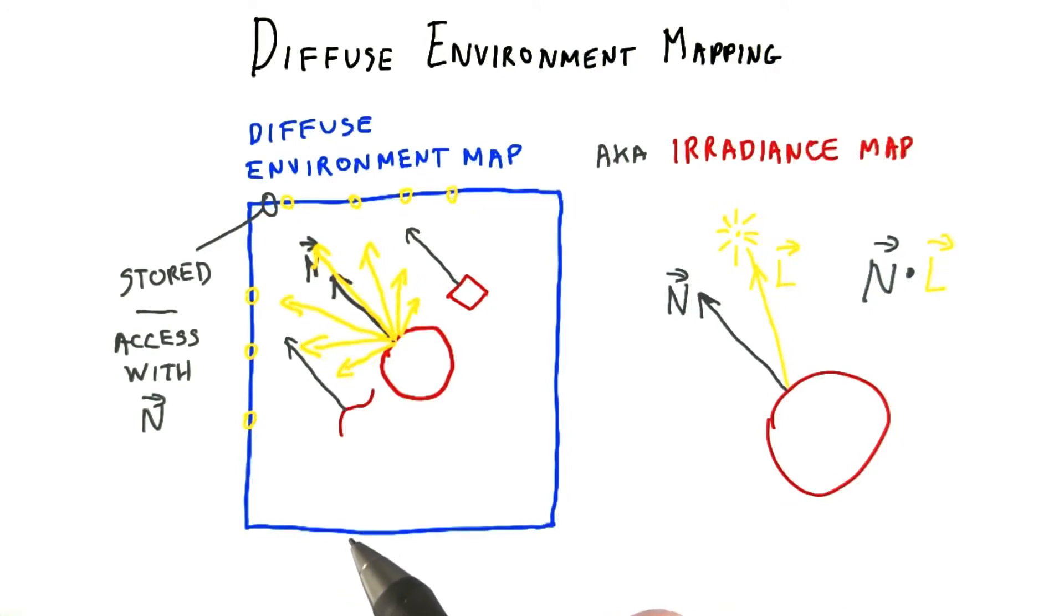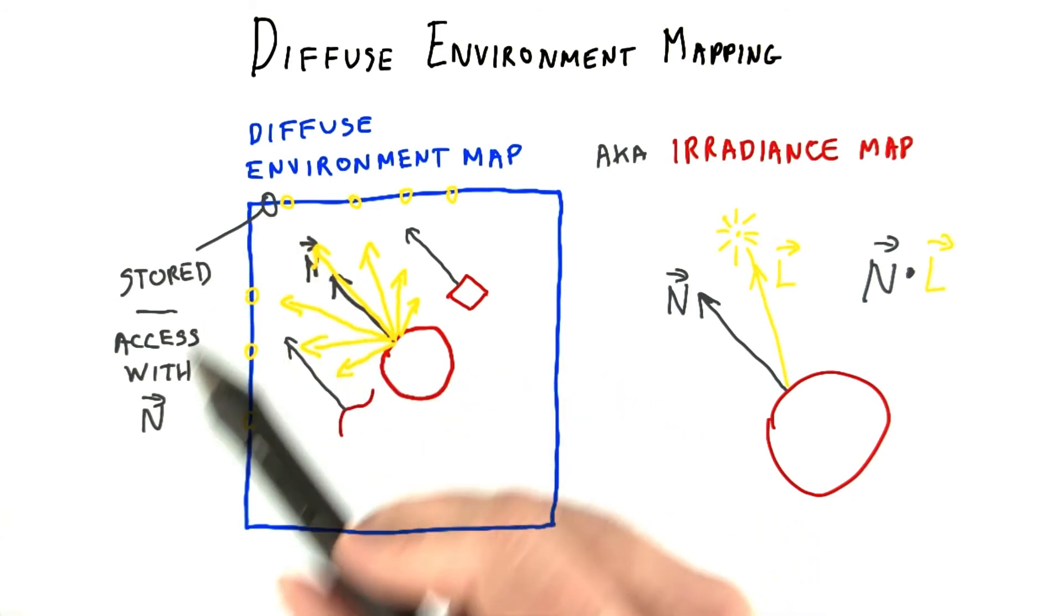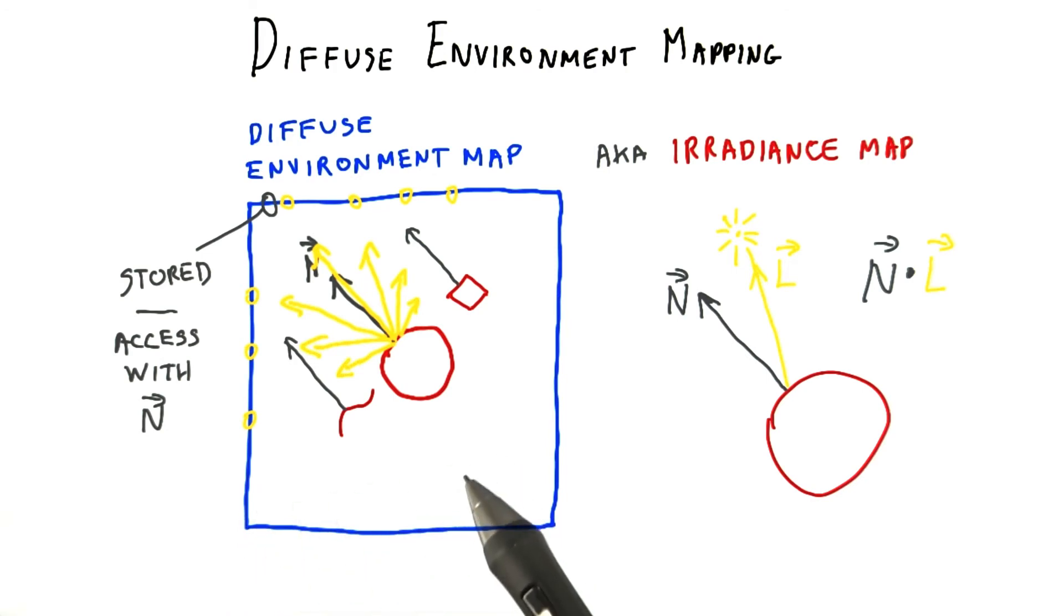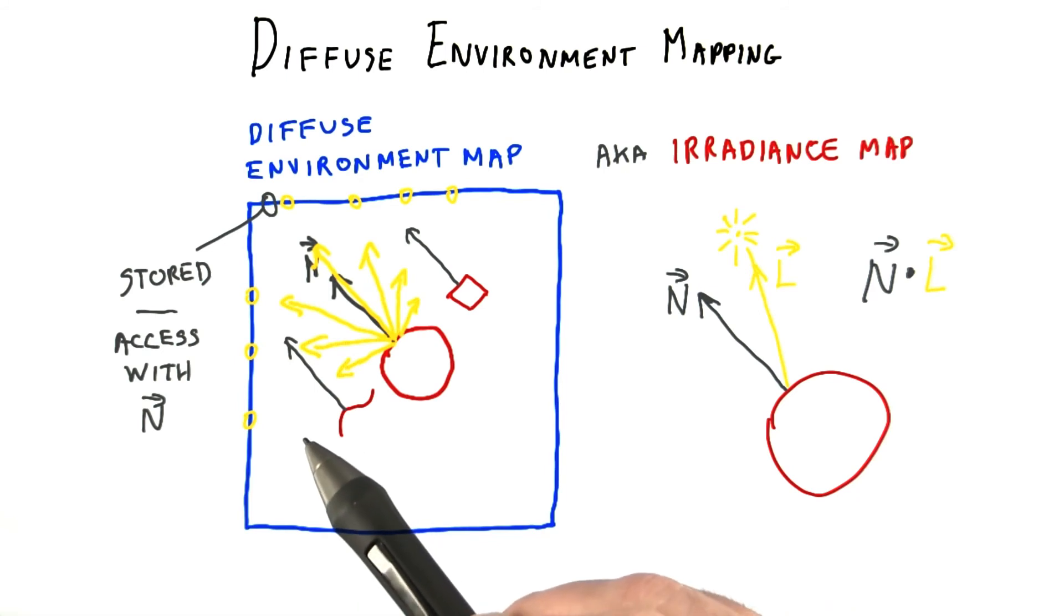The other element working in our favor is that a cube map can be used to store the results of our computations. After we compute the sum of all the contributions for a given normal, we then simply store this value directly at that location in the cube map texture. This texture is called the diffuse environment map, or irradiance map. Now when we want the sum total lighting for the surrounding environment for a given normal, we just look it up in the cube map.